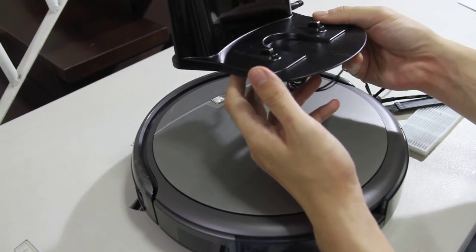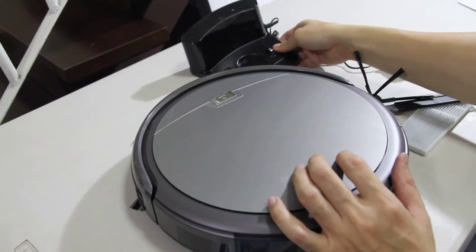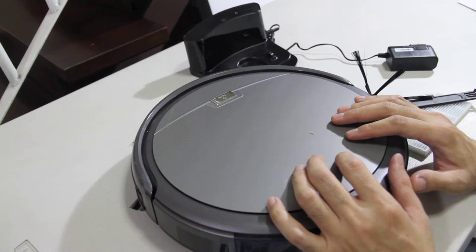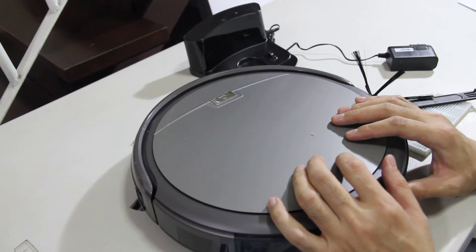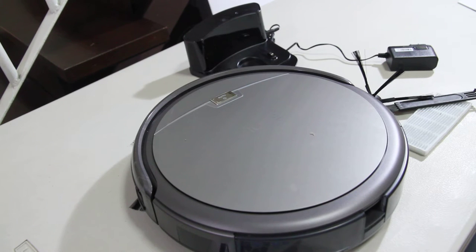And one thing that this robot does not have is a virtual wall that blocks it from areas you don't want it to go to. But I think you can use the virtual wall that's sold at GearBest, and I'll test it out for you guys and see if the virtual wall works.